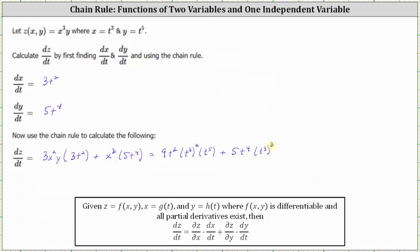And now let's simplify. When we have powers to powers, we multiply the exponents. The square of t cubed is t to the sixth, so we have nine t squared times t to the sixth, times t to the fifth, and then plus five t to the fourth, times the cube of t to the third, which is t to the power of three times three, or t to the ninth.